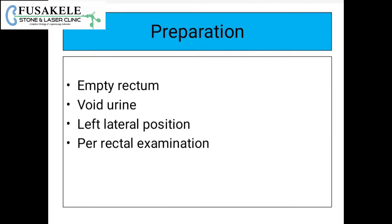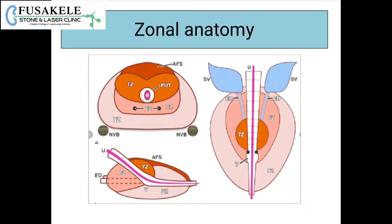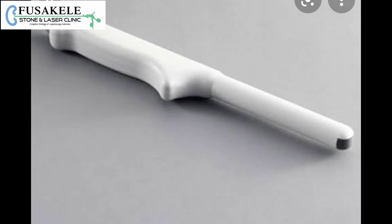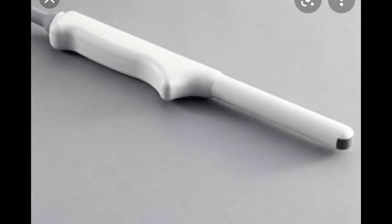As part of the preparation, the patient's rectum is kept empty and the patient voids urine beforehand. The patient is kept in the left lateral position, a per rectal examination is done, and the zonal anatomy of the prostate is kept in mind. I am going to use a SonoSite M-Turbo machine with a C8 probe.